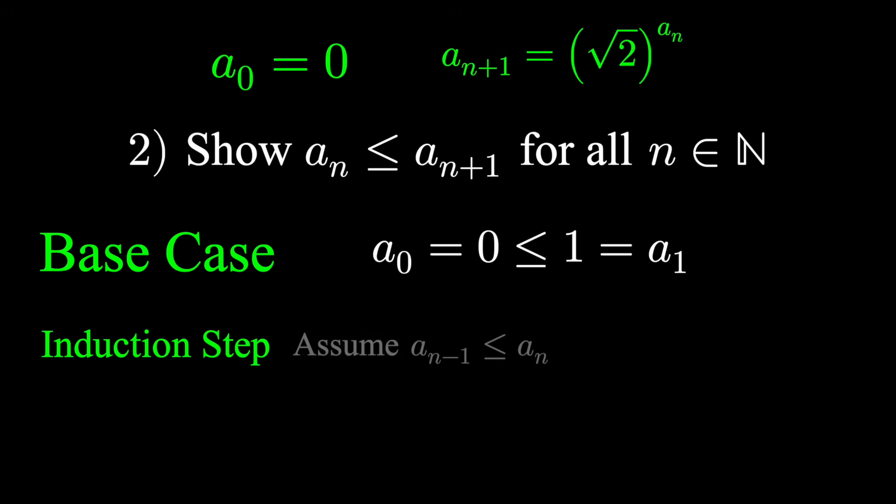Next, suppose a sub n minus 1 is less than some a sub n. Root 2 is larger than 1. Square root 2 to the power of a sub n minus 1 is less than square root of 2 to the power of a sub n. Use the recursive relationship, which is to say that the function is always increasing by induction.